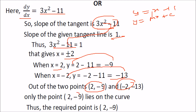However, when you substitute these points back into the curve equation, only one of them satisfies it. So that is your required point on the curve.